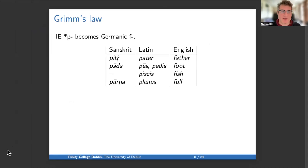So to start with, Indo-European P becomes Germanic F. I use Sanskrit and Latin, which come from quite different parts of Indo-European to exhibit this. So we have pitar in Sanskrit, pater in Latin, father in English. Pada in Sanskrit, pes in the nominative and pedis in the genitive in Latin, and then foot in English. Piscis in Latin, fish in English. Purna in Sanskrit, plenus in Latin, and full in English. So pretty good evidence that a P becomes an F in Germanic.